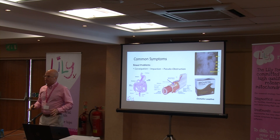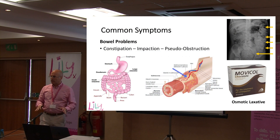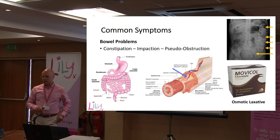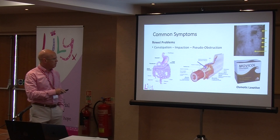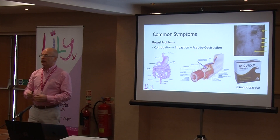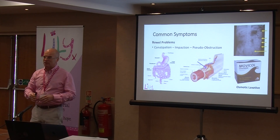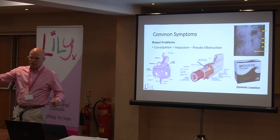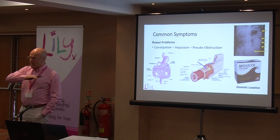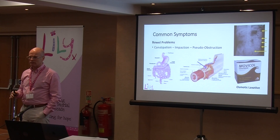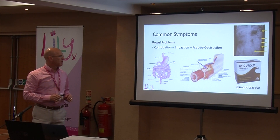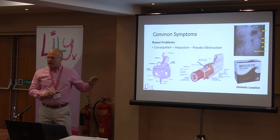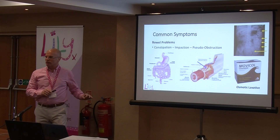Sticking with the bowel — this time at the other end — constipation and gut motility problems are a real problem for patients with mitochondrial disease. If you were to disembowel someone and put the gut out over the floor, it could stretch out to the size of a tennis court. It's a massive organ — essentially a tube from one end to the other, with very specialised functions at various bits.